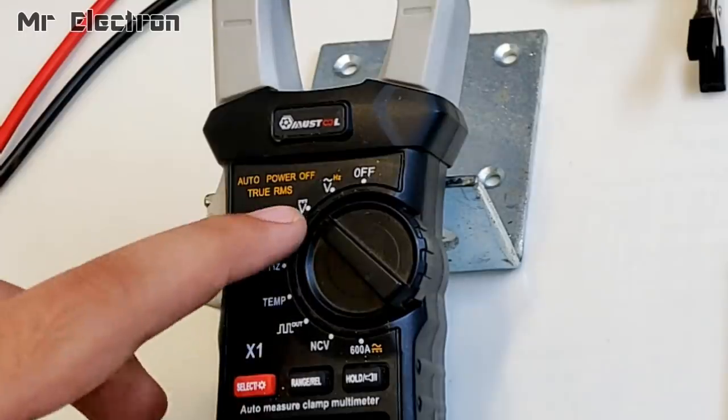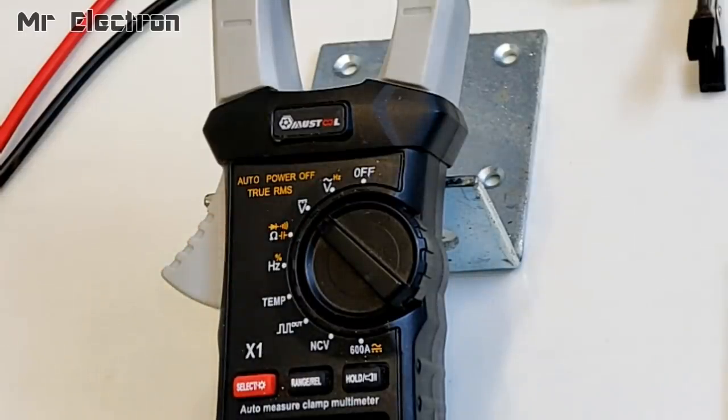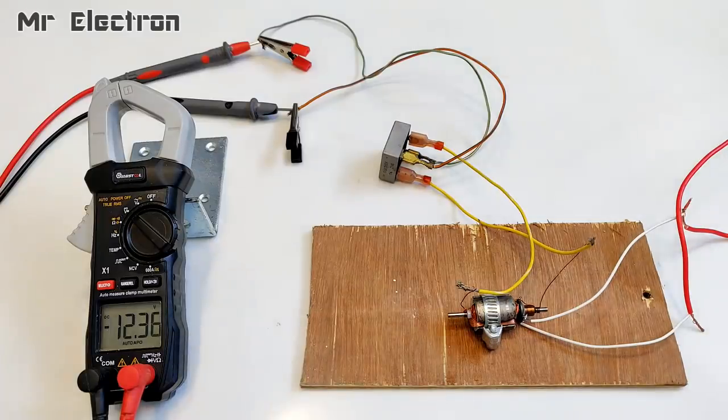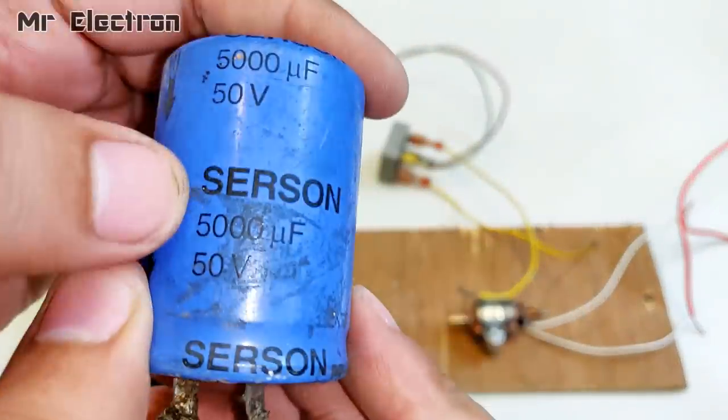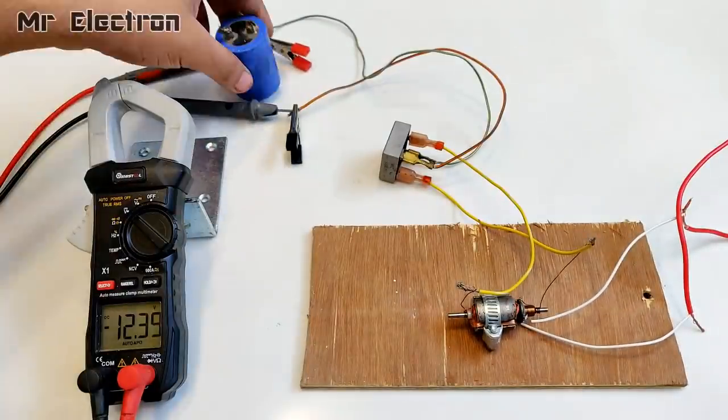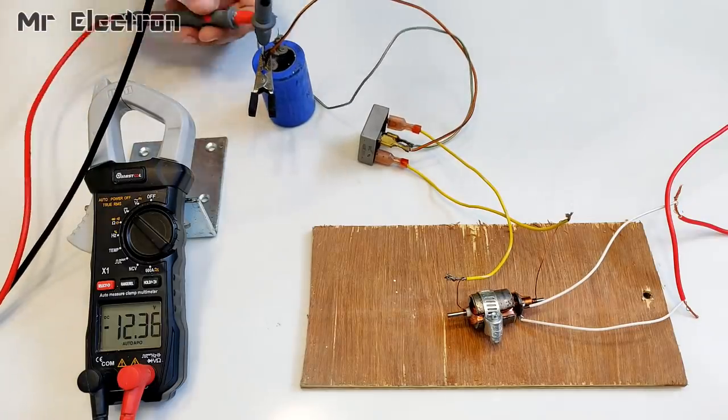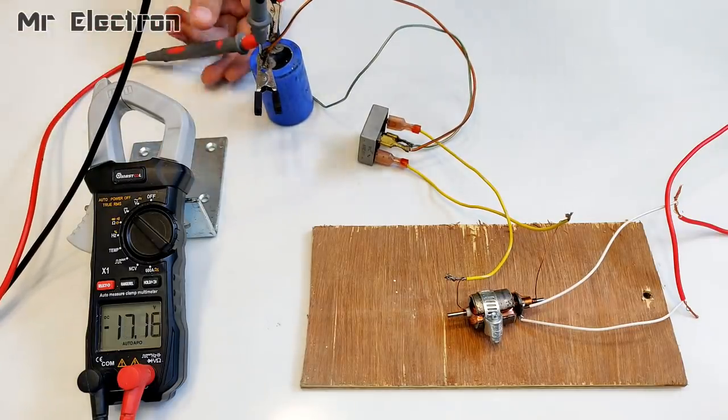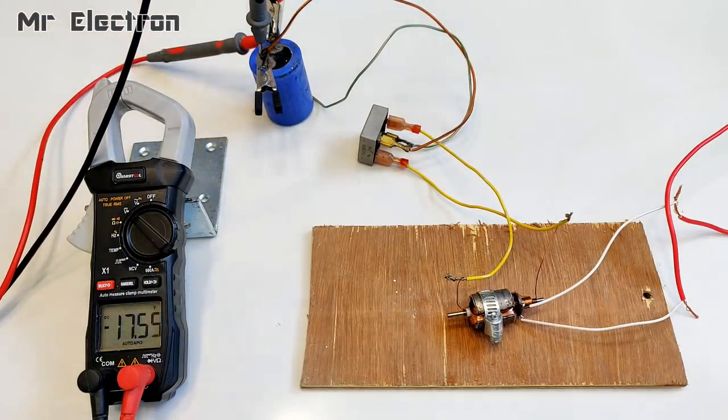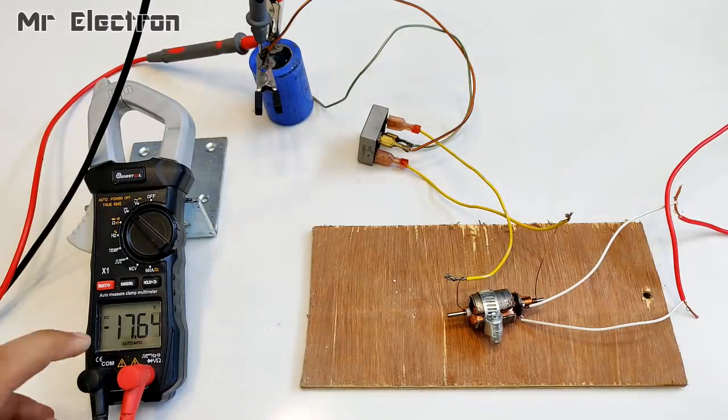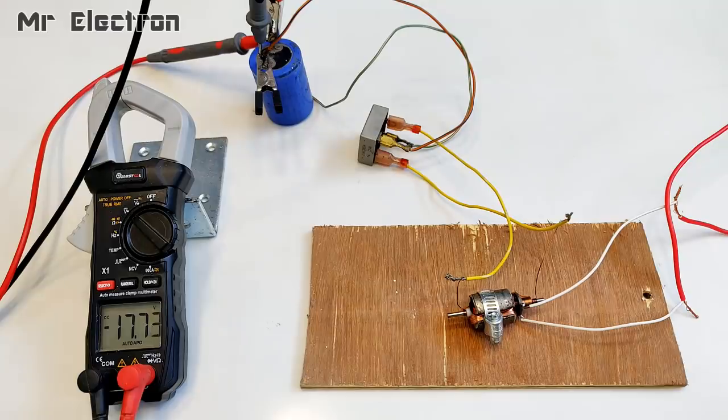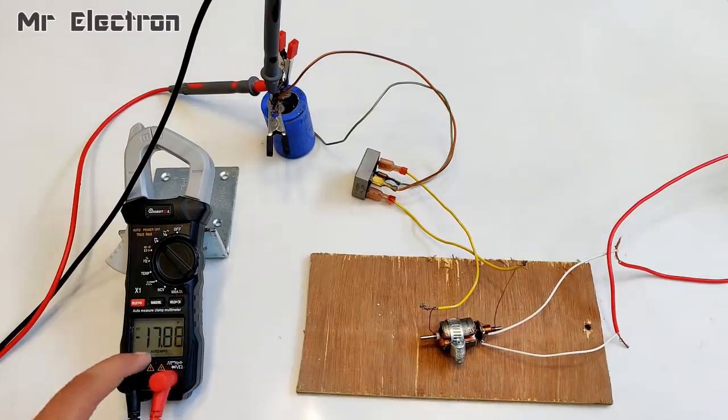So guys, here as you can see, this time I have pointed the meter towards a DC voltage measurement mode. Let's turn on the supply. At present it is showing 12.46. Here as you can see, I have a 50 volts capacitor, 5000 microfarad, that I'm going to use over here. As you can see guys, the voltage has increased from 12 volts to 17 volts. That is exactly what happens when you connect a capacitor, because a capacitor does not charge at an average value but at the peak value of AC pulses.